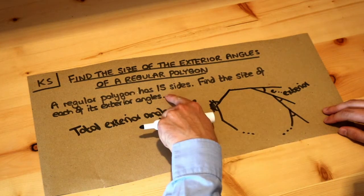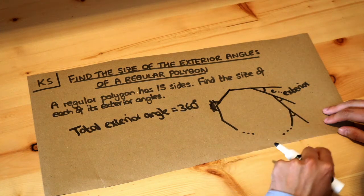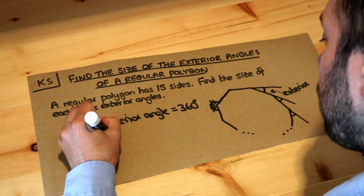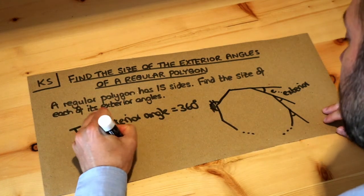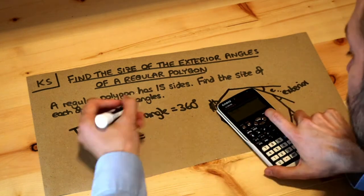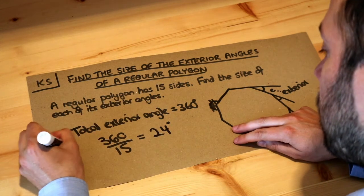So if we have 15 sides, we also have 15 of these exterior angles, one for each of the sides. So we just need to divide the 360 equally into 15 and if we do that we get 24. So the exterior angle is 24 degrees.